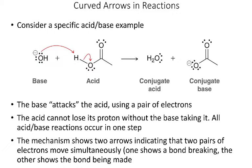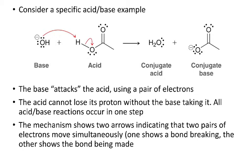In this next example, I've got my base and my acid. What always happens in these acid-base mechanisms is that a lone pair on the base attacks or steals the hydrogen, and then the bond attaching the hydrogen — in this case to the oxygen — becomes another lone pair on the thing losing the hydrogen. We also have to be aware of charges: OH- was negative, but it's gaining an H+, so it goes from negative to neutral. The other compound was neutral but lost an H+, so it goes from neutral to negative.